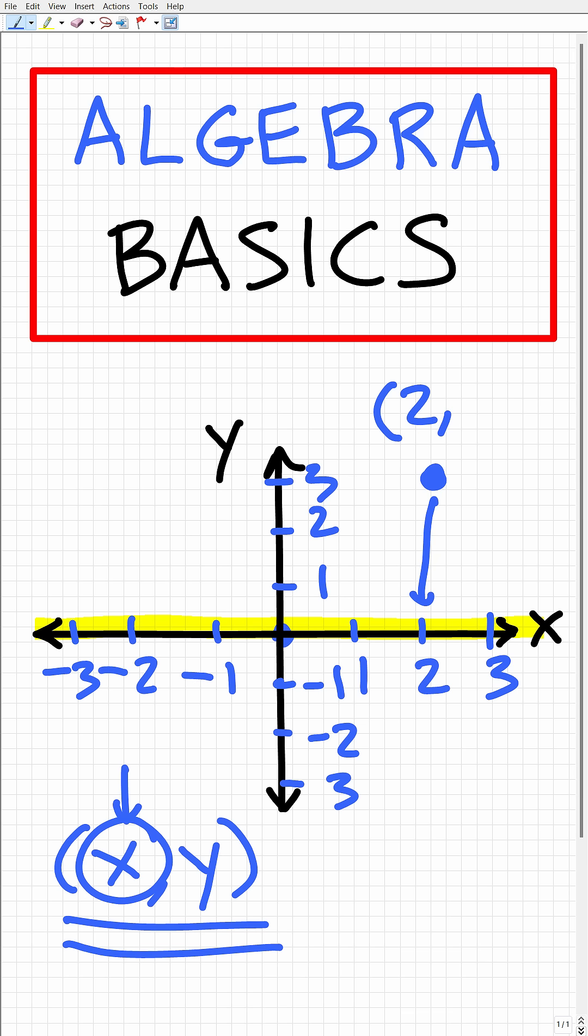Now we're going to look on the y-axis, and it appears this point is about where three is on the y-axis. We'll put a three right here. For example, this point or coordinate could be pretty close to the ordered pair (2,3).